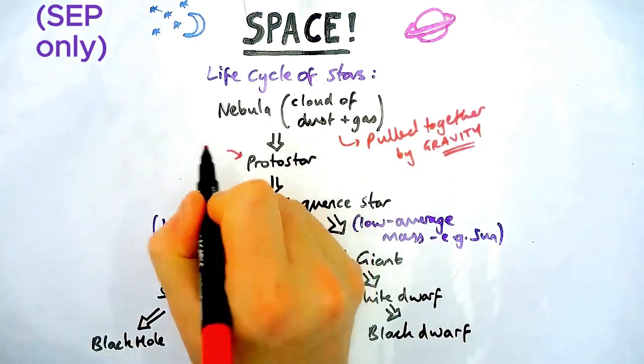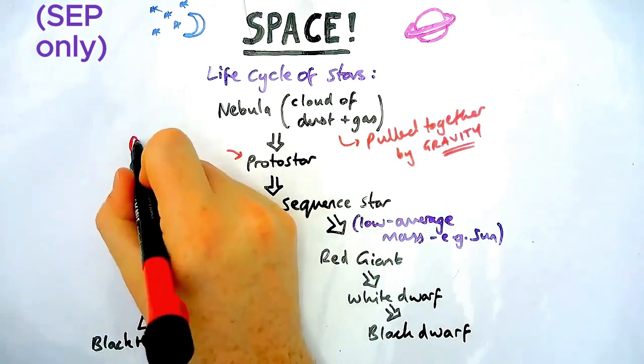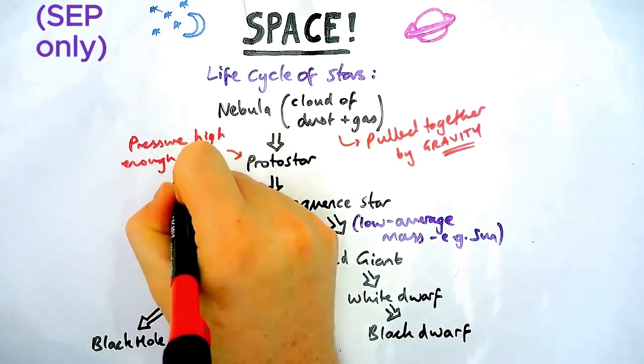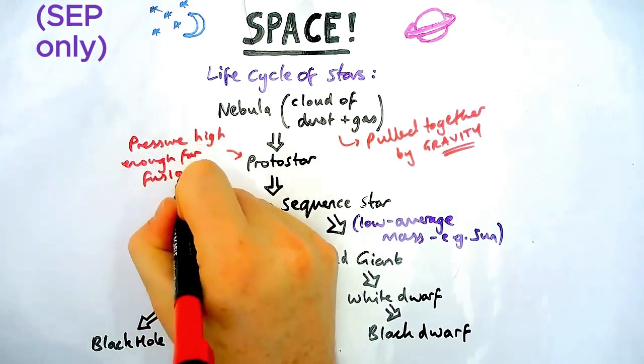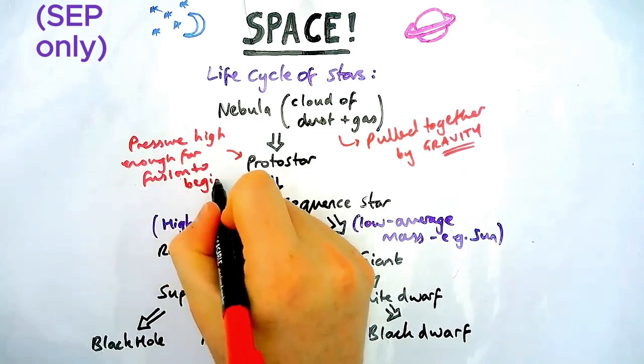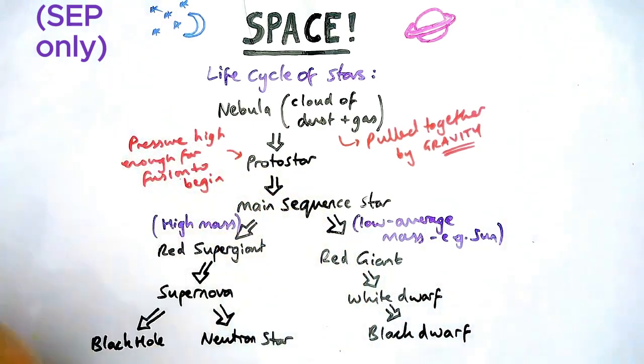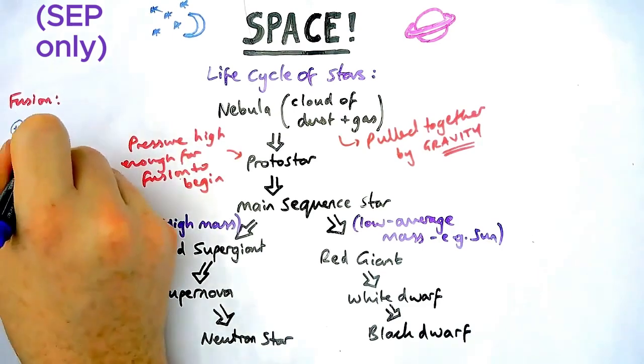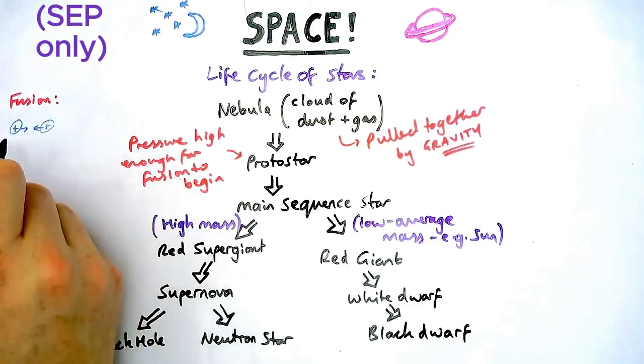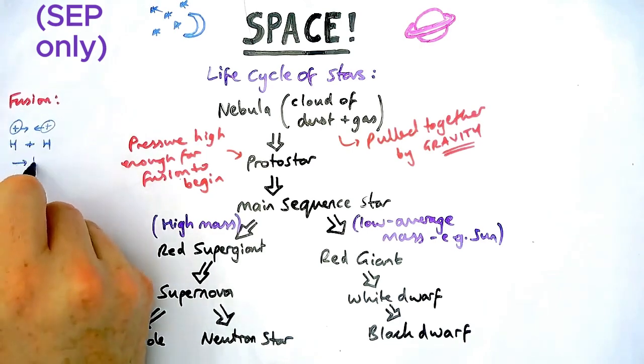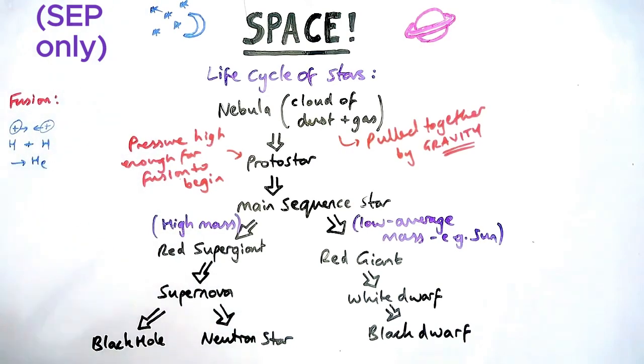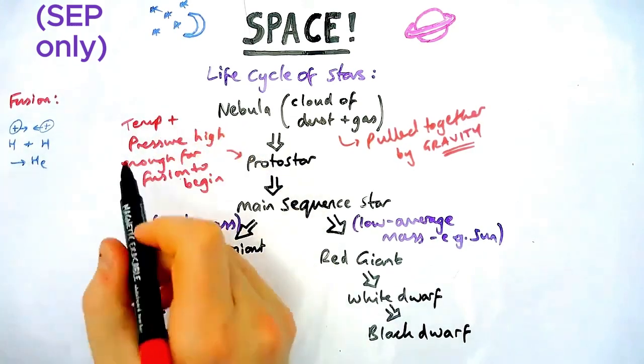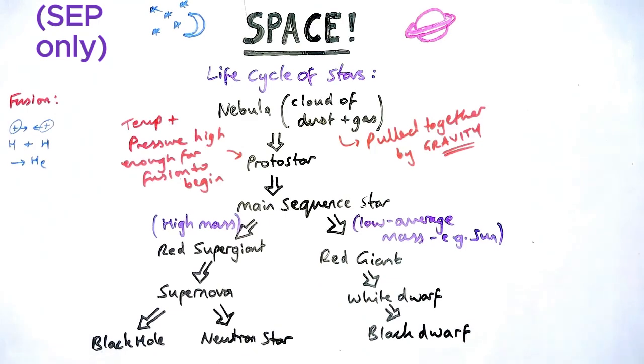Next, when we have our protostar forming, the protostar is kind of like the stage before the star. And this is when if pressure and temperature is high enough for nuclear fusion to occur or to begin. Now if you need a quick recap on fusion, we'll cover that when we do paper one videos. But essentially, nuclear fusion is when two light nuclei, usually hydrogen, combine together to make helium and it releases energy. But this only happens at high temperatures and pressures. So you need a lot of the matter in one place under high gravity for this to begin.